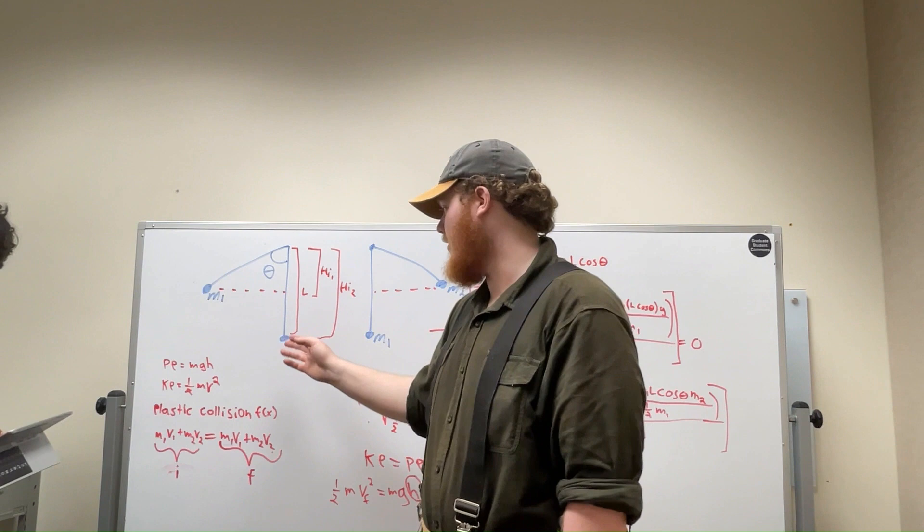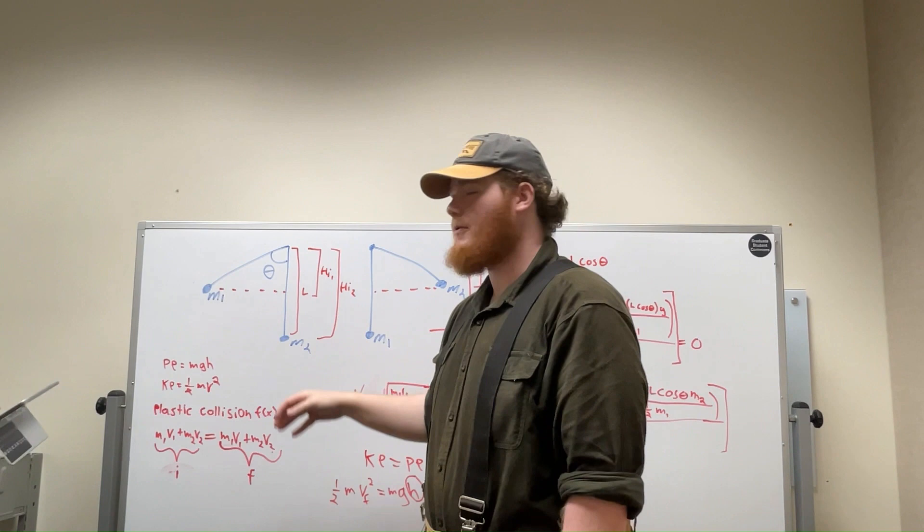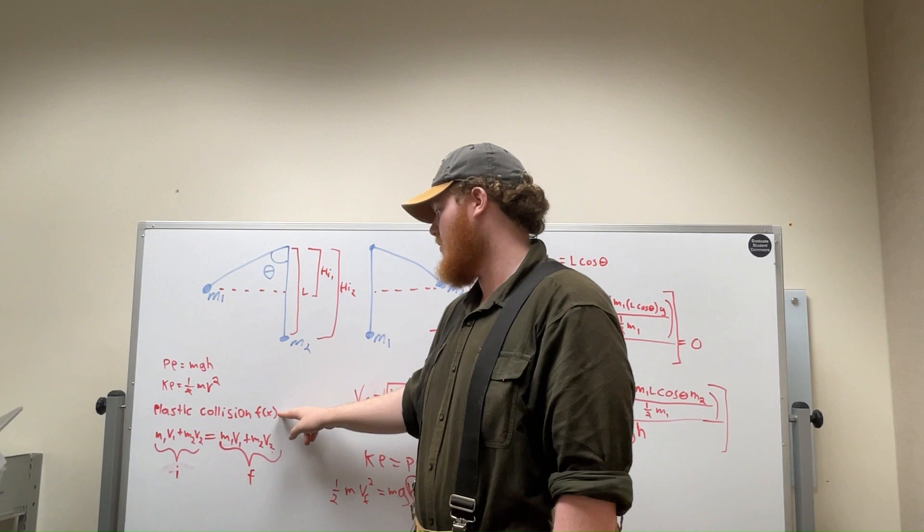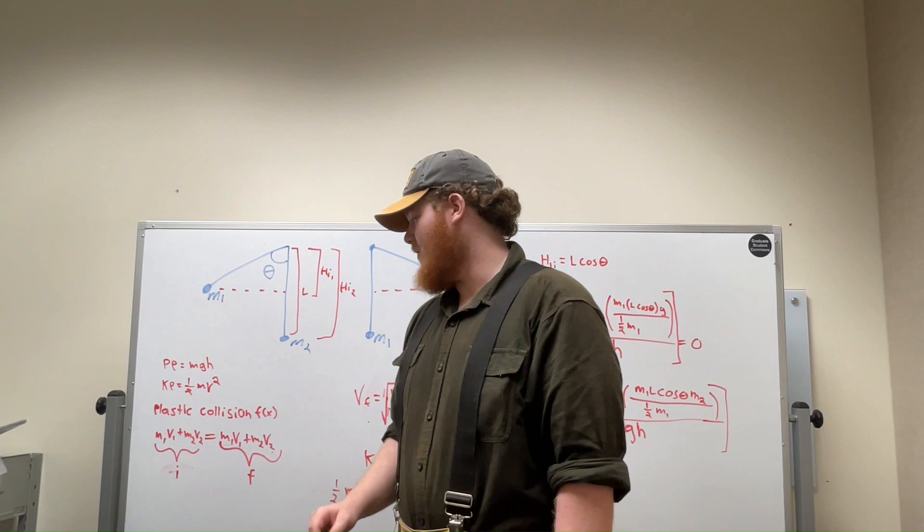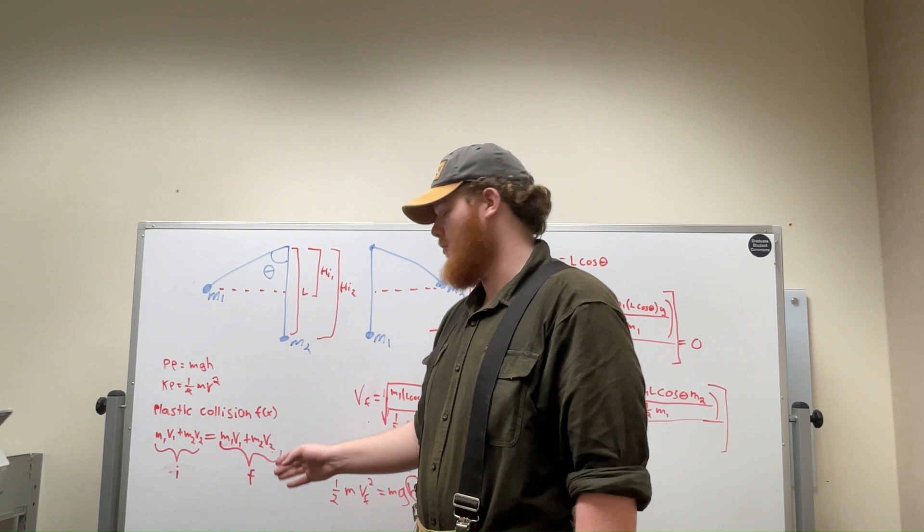For our formulas that we use, we use potential energy, kinetic energy, and elastic collision formula. Potential energy is MGH. Kinetic energy is 1/2 MV squared. Elastic collision is M1V1 plus M2V2, all that initial, equals M1V1 plus M2V2, all that final.